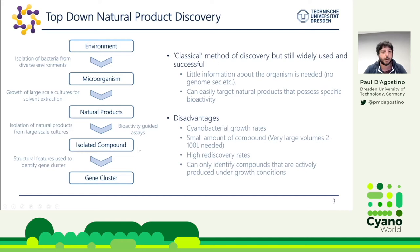The problem with rediscovery is that once you've gone through a lot of the process and get to your isolated compound, you might discover the compound is already known. And lastly, you can only identify compounds that are actively produced under the growth conditions — you might have a bacterium that produces the greatest natural products ever, but if it doesn't actually produce them during your culture, then you'll never be able to identify them.